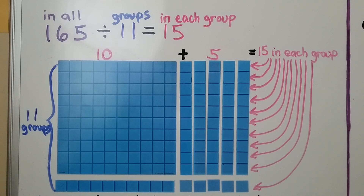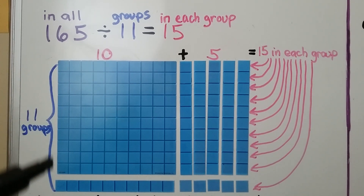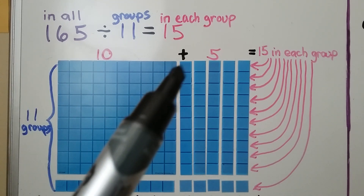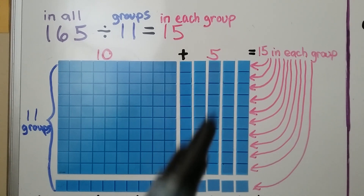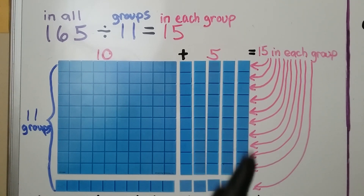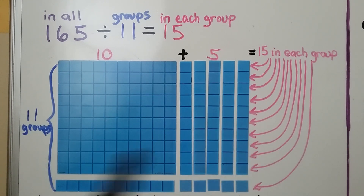For 165 divided by 11, that means we have 165 in all, and we're going to divide it into 11 equal groups. We start with a 100 square — that's going to be 10 plus one more, making 11 groups. And we put another 10 and a 1, another 10 and a 1, another 10 and a 1, another 10 and a 1, another 1 and another 1. That puts 15 in each row, in each group.